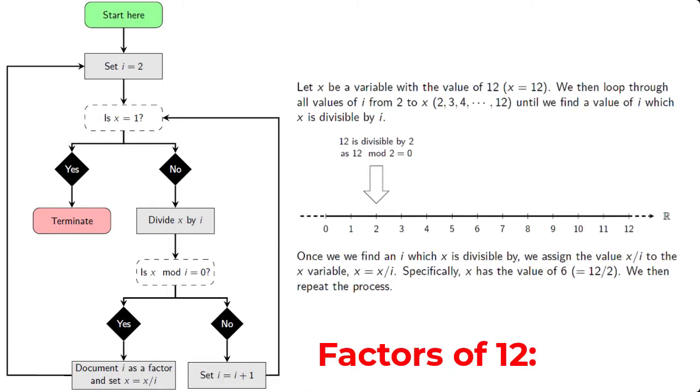Let's take a look at an example. Let x be equal to 12. We start our factorization process by setting i equal to 2. Then we ask, is x equal to 1? And the answer is no. 12 is not equal to 1. Then we divide x by i, or more precisely, we divide 12 by 2. Then we ask ourselves, is x mod i equal to 0? Or in other words, is 12 mod 2 equal to 0? And the answer is yes. We then document i, or 2 in this case, as a factor. And we set x equal to x divided by i. So x gets the new value of 12 divided by 2, which is equal to 6. x is now 6.